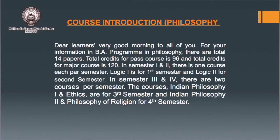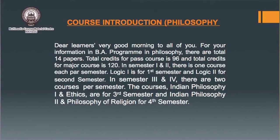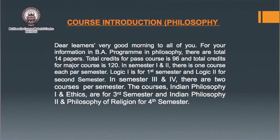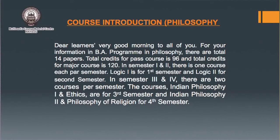For your information, in BA Programming Philosophy, there are total 14 courses. The total credit for past courses is 96 and total credits for major courses is 120. In semester 1 and 2, there is one course per semester: Logic 1 is for first semester and Logic 2 is for second semester.